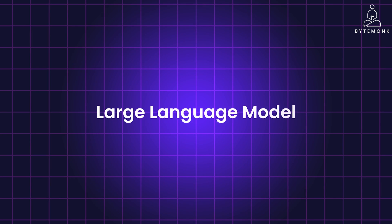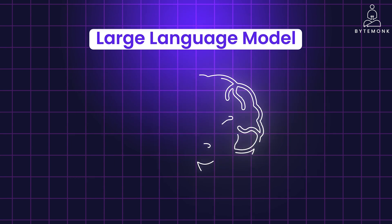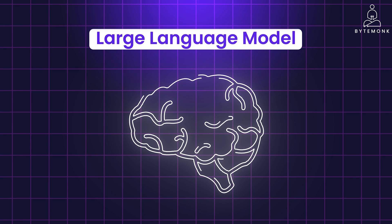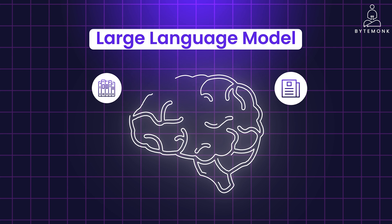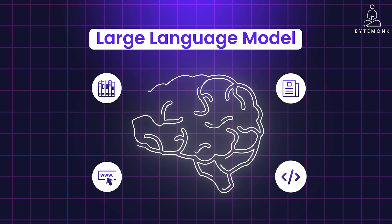LLM, or Large Language Model, is a powerful type of AI program. LLMs are sophisticated systems, but the concept is much simpler than you may think. Think of it as a big brain trained on a massive mountain of text — think books, articles, websites, or even code.